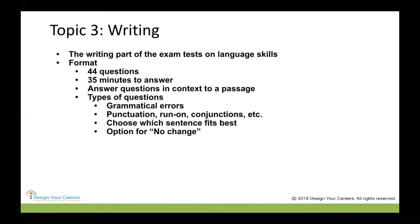The next section is writing, the shortest portion of the test — 44 questions and only 35 minutes. You answer these questions in context of a passage, similar to reading. Types of questions include grammatical errors (whether a word is incorrectly plural or a pronoun is wrong), punctuation errors, run-on or conjunction errors, and choosing which sentence fits best in the context of the passage. There will be an option for 'no change' on some questions, meaning what's already in the passage is already correct.